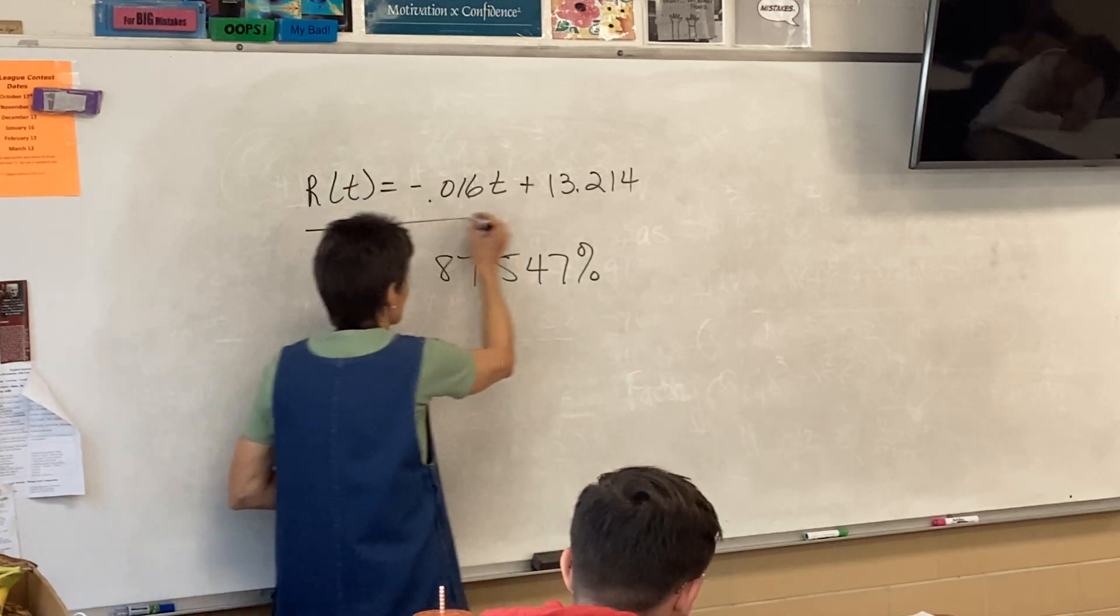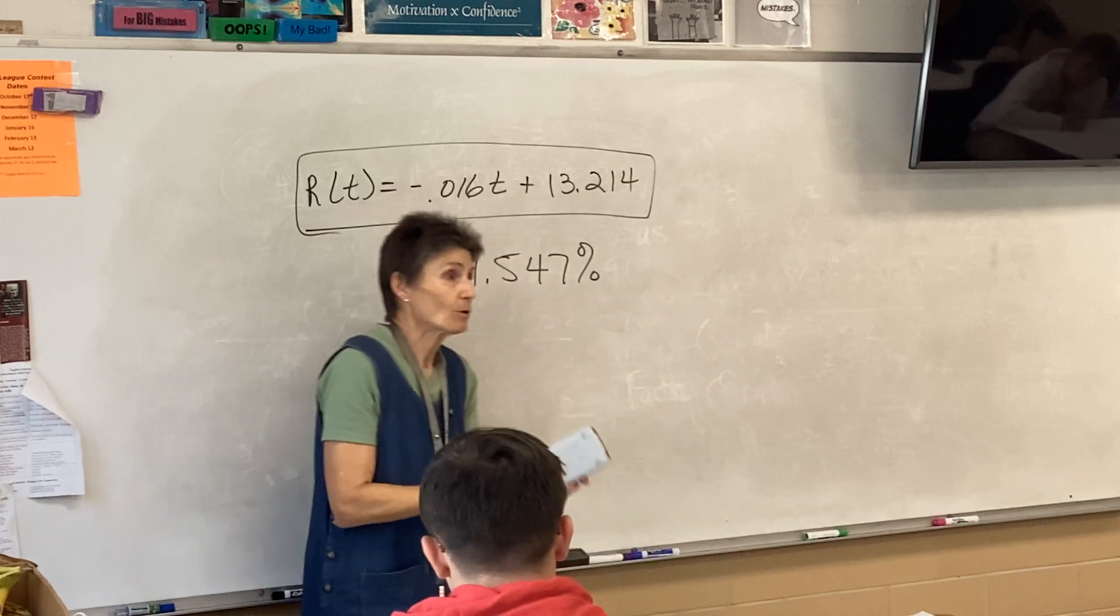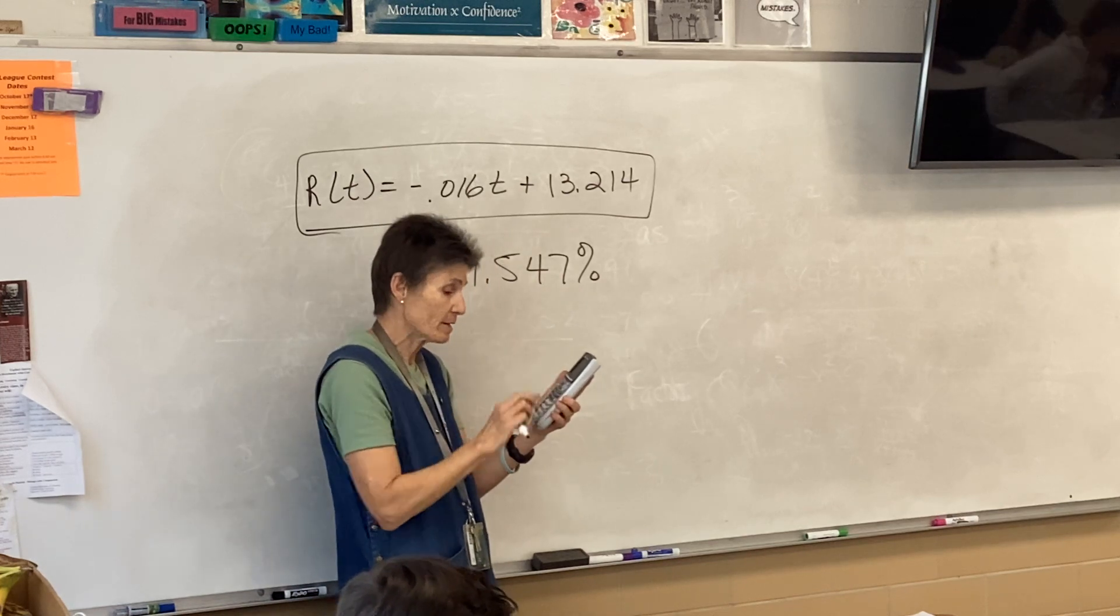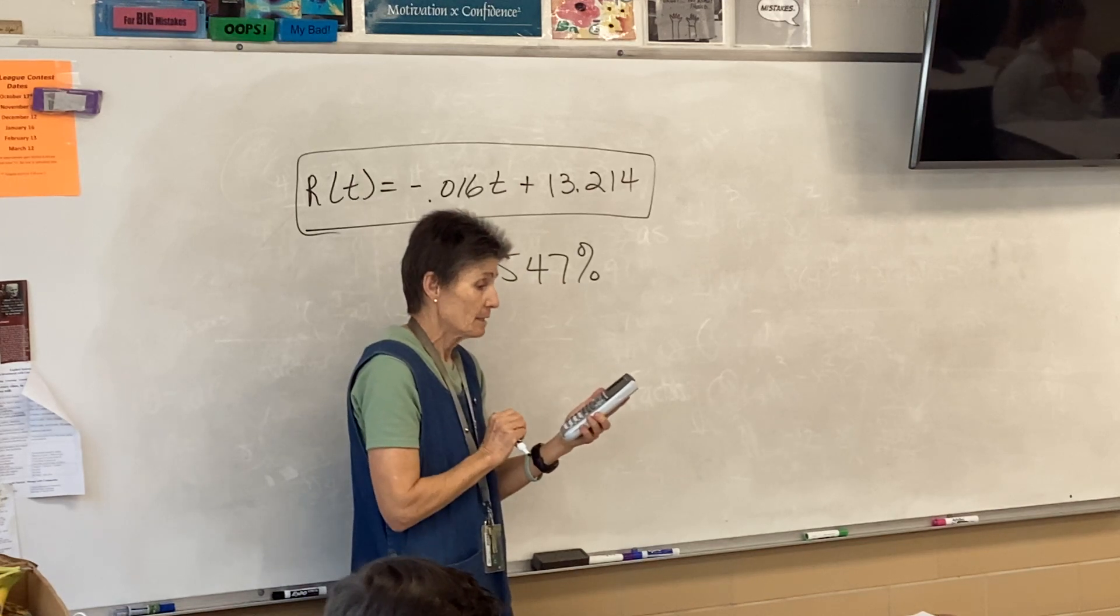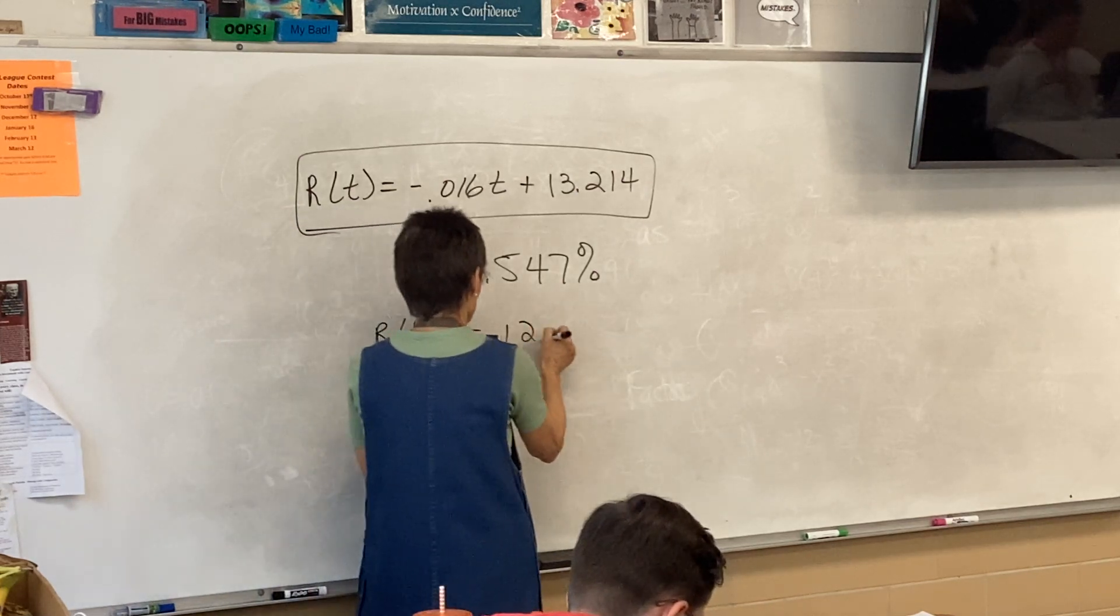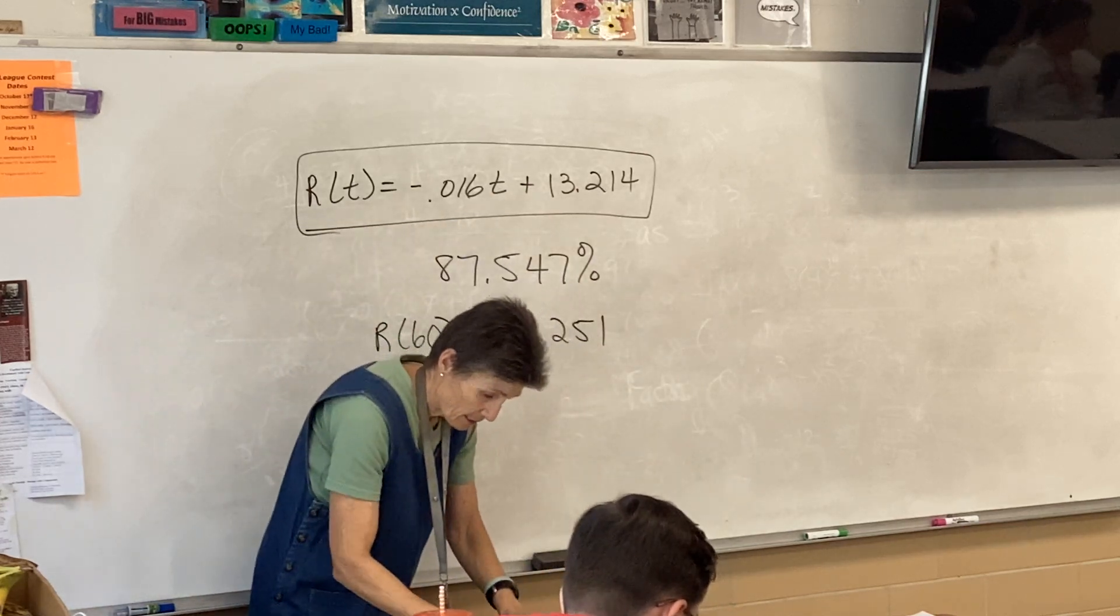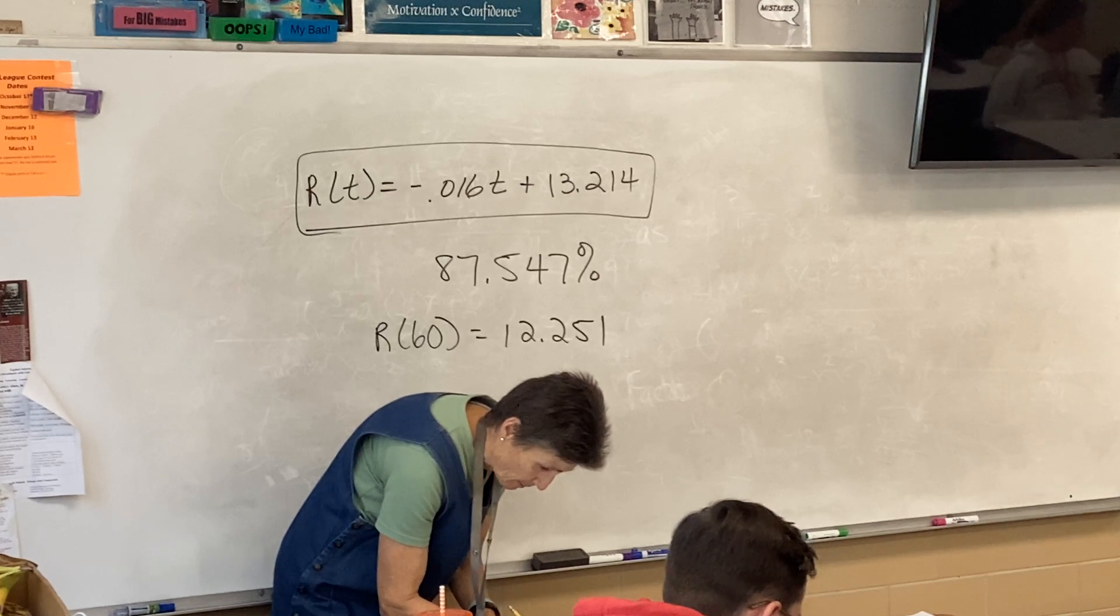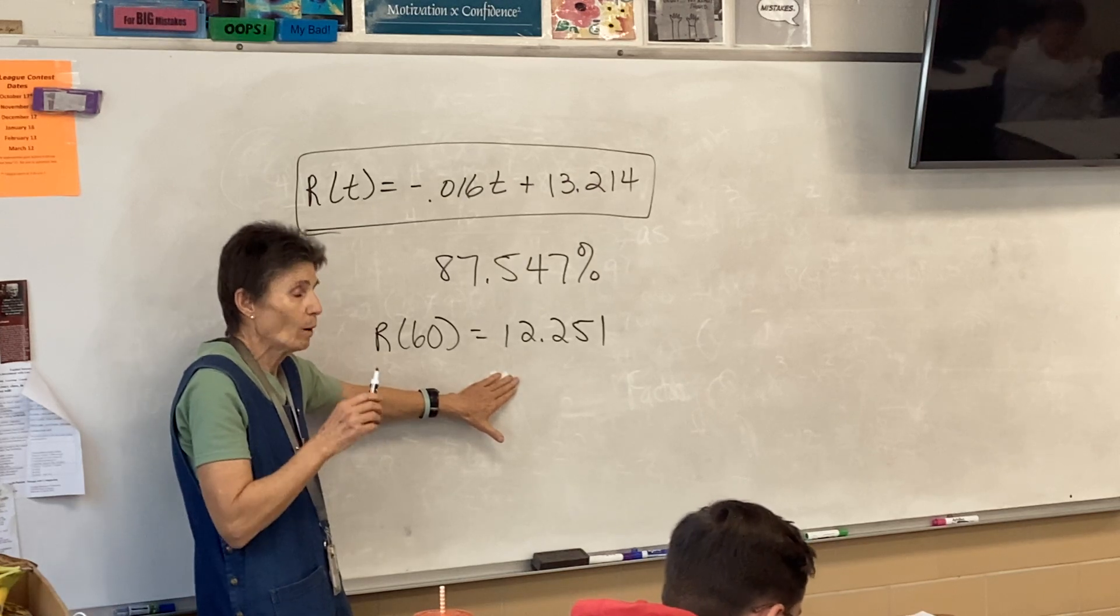Well, here's your equation. What happens if you put 60 into it? Well, remember, you can do that on your calculator by just putting in your Y. So, go to your variables, pick Y, and then in parentheses, put 60. And it gives me R of 60 is 12.251. Let's see, I messed that up the first time. Okay? Now, what does that mean? That's what I get when I put 60 in. What does that mean?